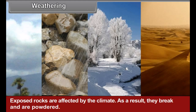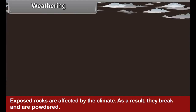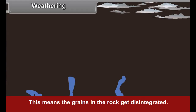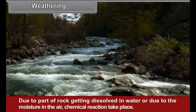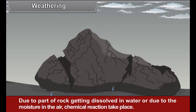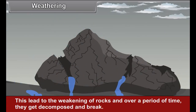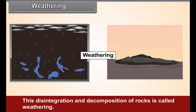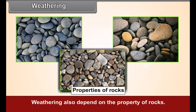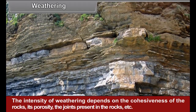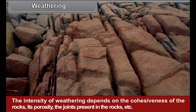Weathering. Exposed rocks are affected by the climate; as a result, they break and are powdered. This means the grains in the rock get disintegrated. Due to parts of rock getting dissolved in water, or due to moisture in the air, chemical reactions take place. This leads to the weakening of rocks and, over a period of time, they get decomposed and break. This disintegration and decomposition of rocks is called weathering. Weathering also depends on the properties of rocks — the cohesiveness of the rock, its porosity, and joints present in the rocks.